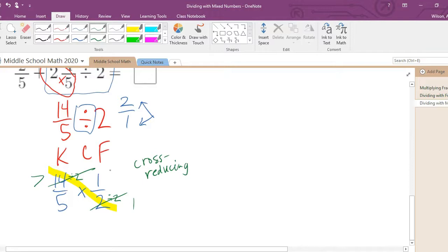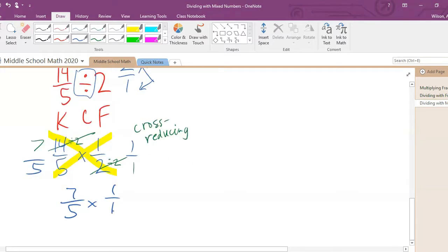So now we look at five and one. Those cannot be cross reduced, so they stay the same. So we have seven over five and then one over one. So we're supposed to multiply seven over five times one over one. We're multiplying fractions. You just simply go straight across. Seven times one is seven, and five times one is five. So now we have seven fifths.